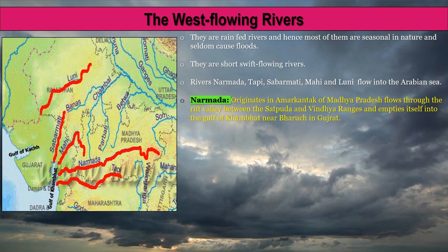The Narmada River originates in Amarkantak of Madhya Pradesh, flows through the rift valley between the Satpura range and the Vindhya range, and empties itself into the Gulf of Khambat near Bharuch in Gujarat.